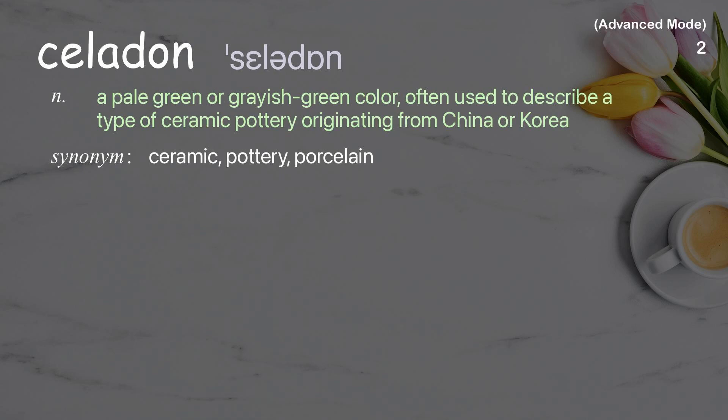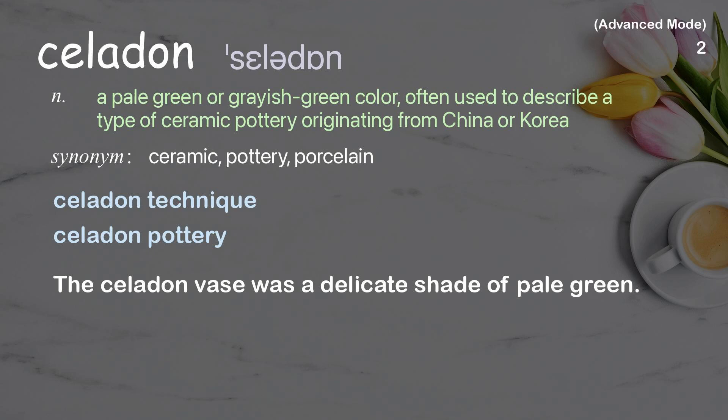Celadon: a pale green or grayish green color, often used to describe a type of ceramic pottery originating from China or Korea. Examples: celadon technique, celadon pottery. The celadon base was a delicate shade of pale green.